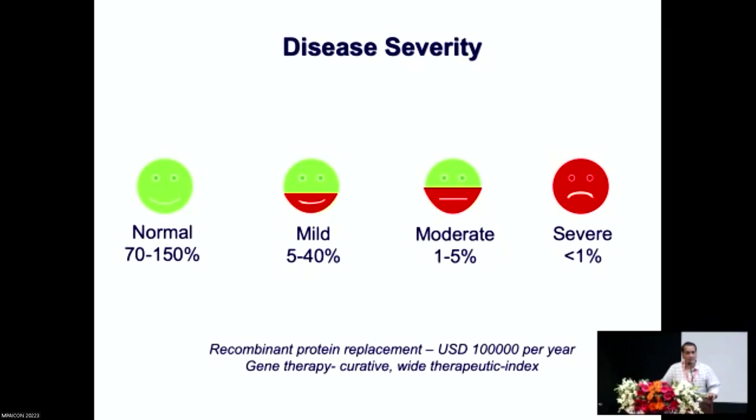On the other hand, gene therapy is potentially curative. A single injection of a normal copy of the factor 8 or factor 9 gene into your patient can give them lifelong support for the necessary coagulation proteins. The second attractiveness is that the disease itself has a wide therapeutic index — if you can convert a spontaneous bleeder into only a post-traumatic bleeder, that gives you a lot of latitude in terms of a therapeutic index.